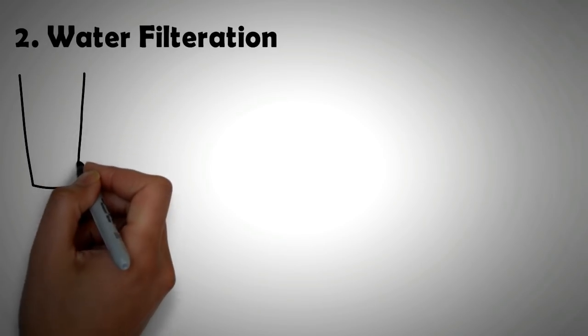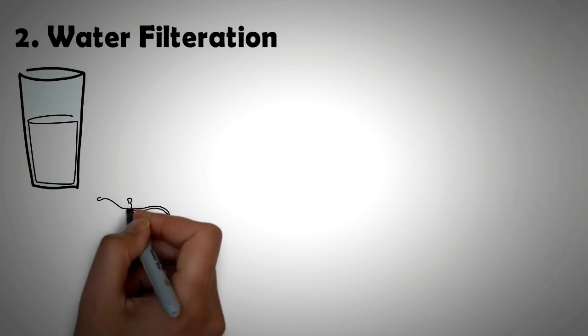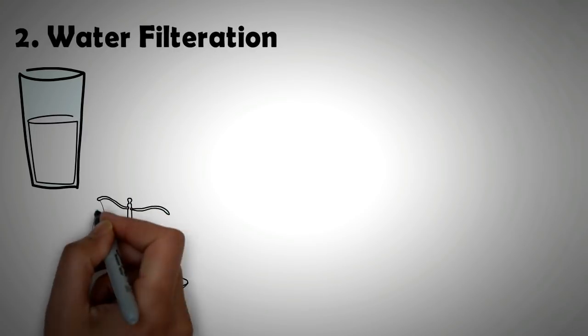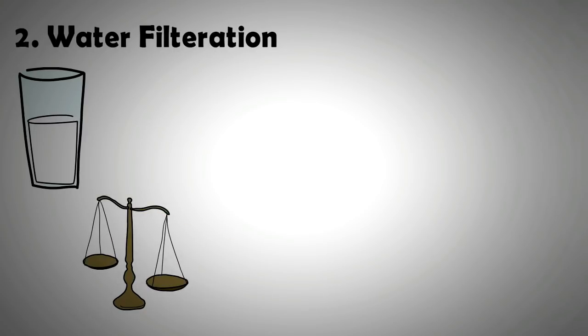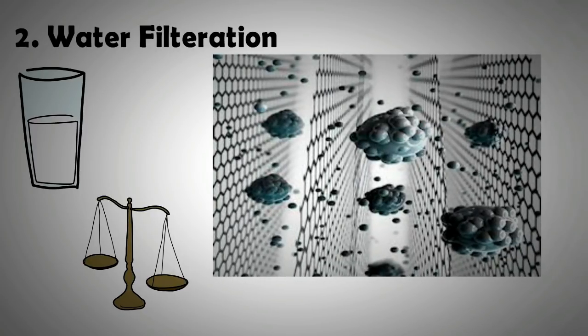The second important application is water filtration. Fresh water for human consumption is getting scarce. Furthermore, the availability of fresh water is compounded by the uneven distribution of resources. Although desalination process has been traditionally used where salt water is available, it is an energy-intensive process. Using graphene as a filter can help in tackling this problem.